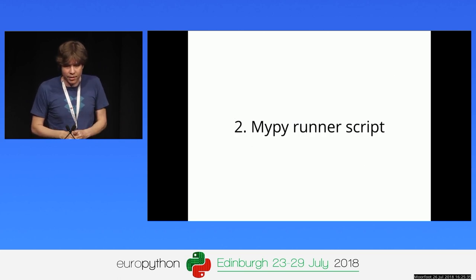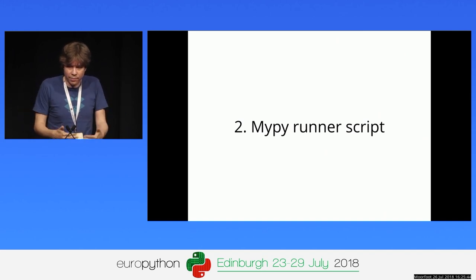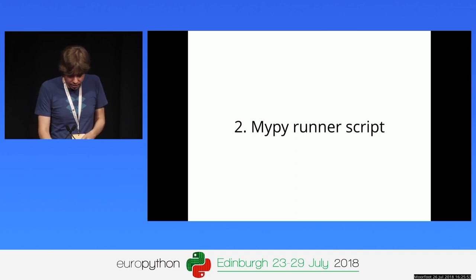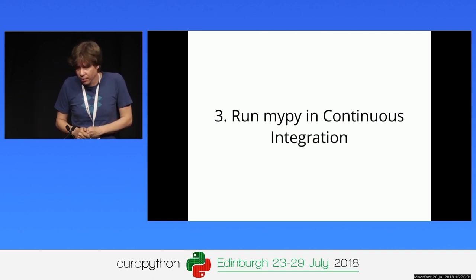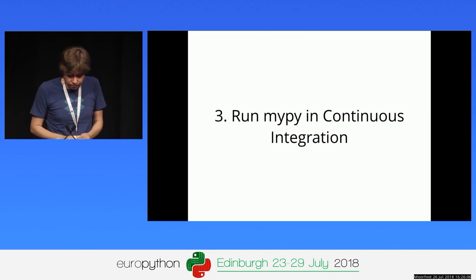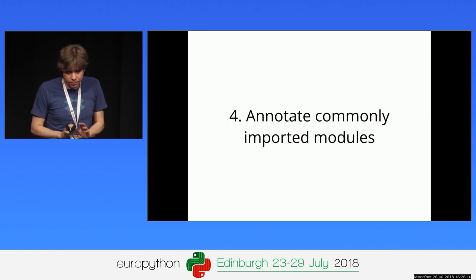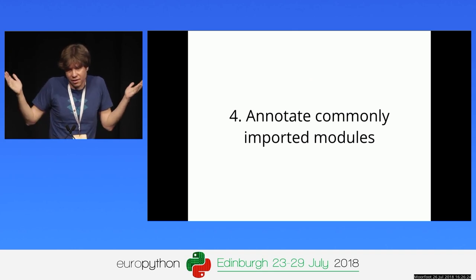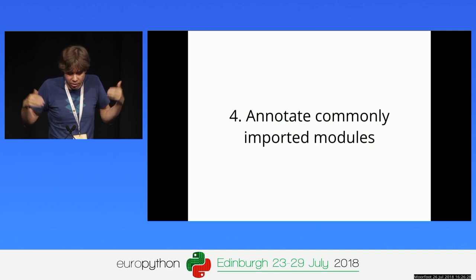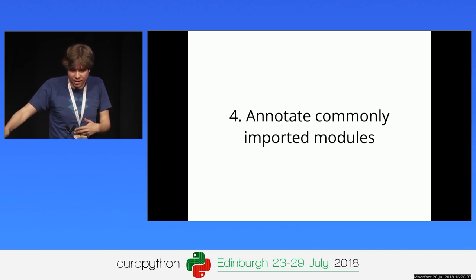Once you have a clean mypy run, write a script into your repo and have everybody on your team use it to ensure consistent results. Run it in CI so nobody accidentally introduces additional errors. The fourth step is to add annotations to commonly imported library modules early on — otherwise every call into those modules returns Any, severely limiting type checking. Annotating a handful of key library functions and classes will greatly increase coverage and help mypy catch more errors.